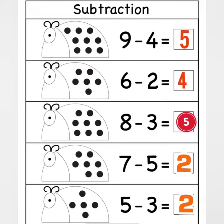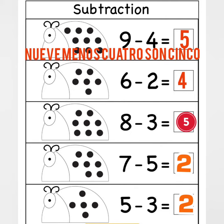Hello, so we're going to go over five different subtraction problems. I'm going to say it in English first and then translate it to Spanish. For the first one, we have nine minus four. Nine minus four is going to be five. In Spanish you're going to say: nueve menos cuatro son cinco.